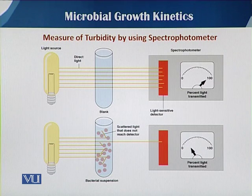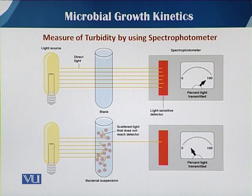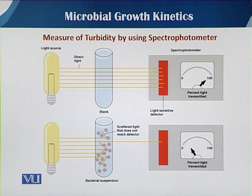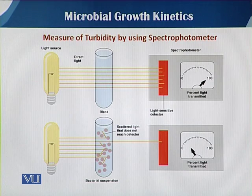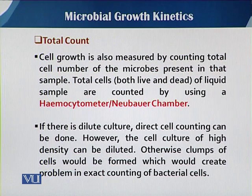As cells increase, turbidity increases, which can be easily measured by the spectrophotometer. However, there are some limitations to this method: sometimes when the medium color is dark due to utilization of substrate, turbidity also increases, which can affect the estimation of growth. So we need an alternative method for microbial growth.